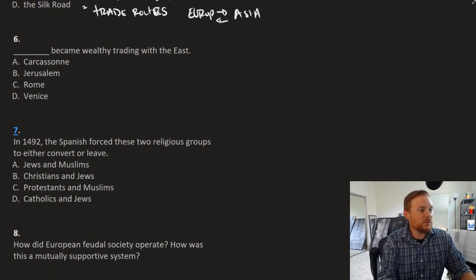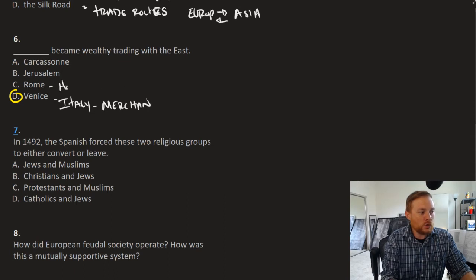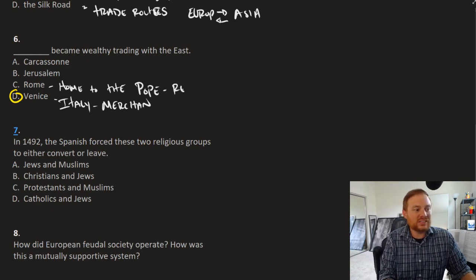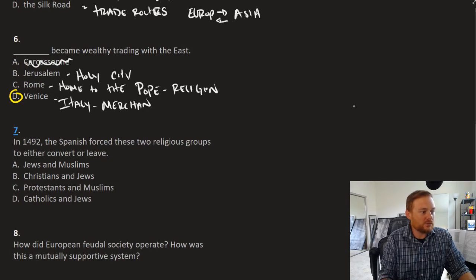Number six, blank became a wealthy trading city in the east. The answer is Venice. Venice is located in Italy, known for its merchant activity. Rome, we can think of that as home to the Pope. So it's not necessarily economically significant. Rome was much more religious. It has much more significance in terms of religion. Jerusalem, again, this is the holy city. And Carrasco, I have no idea what that is. It's not the right answer. Venice.